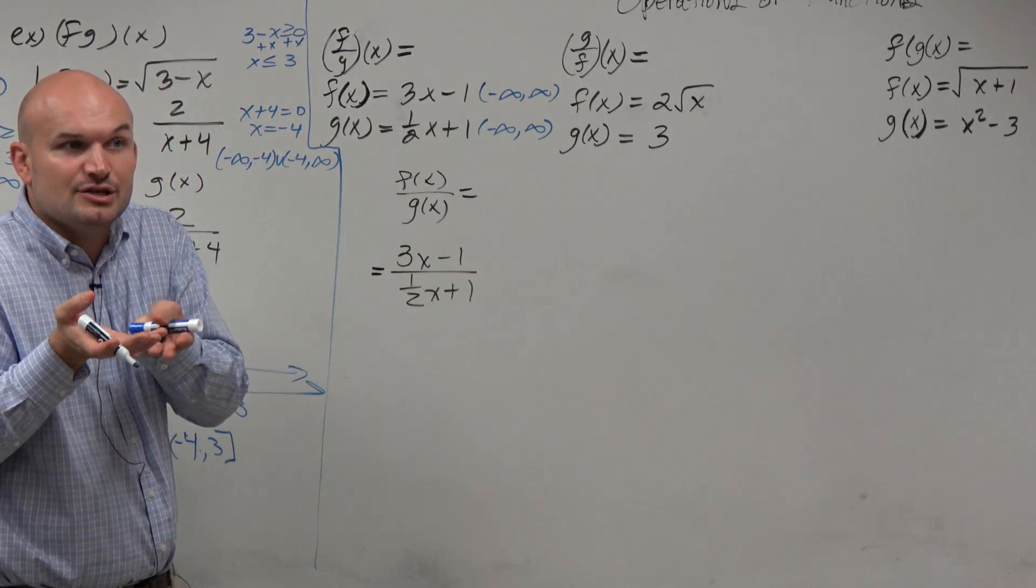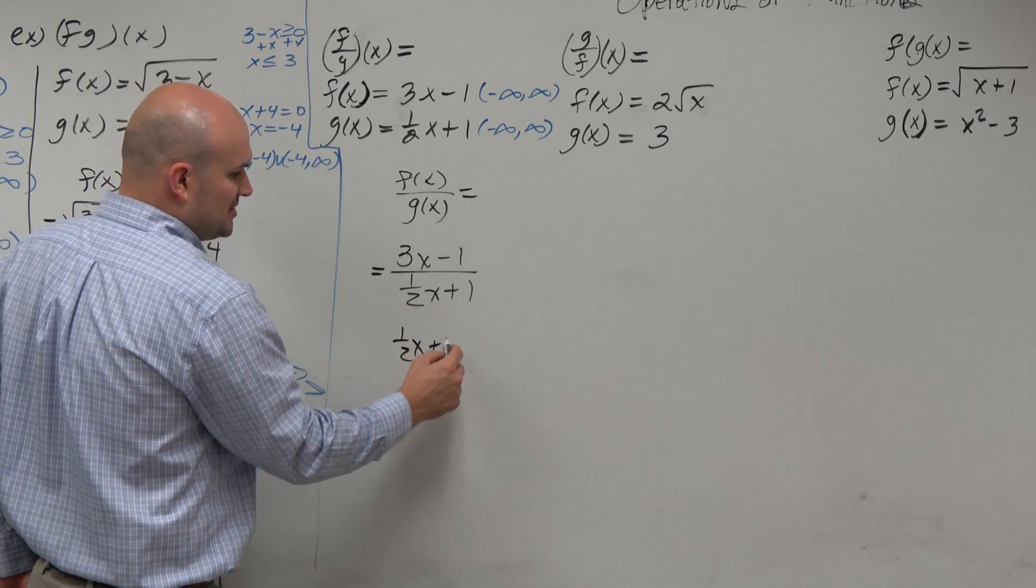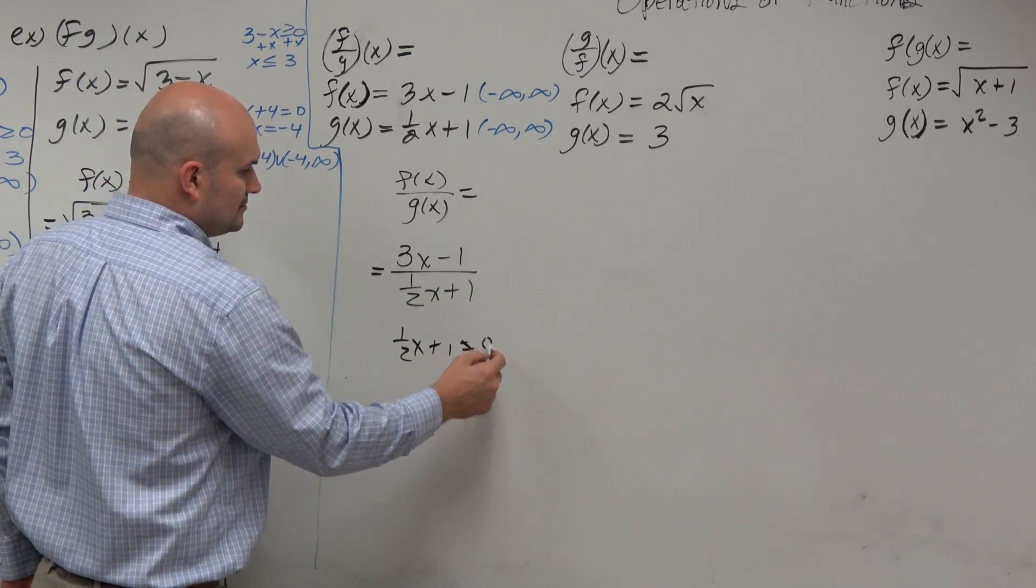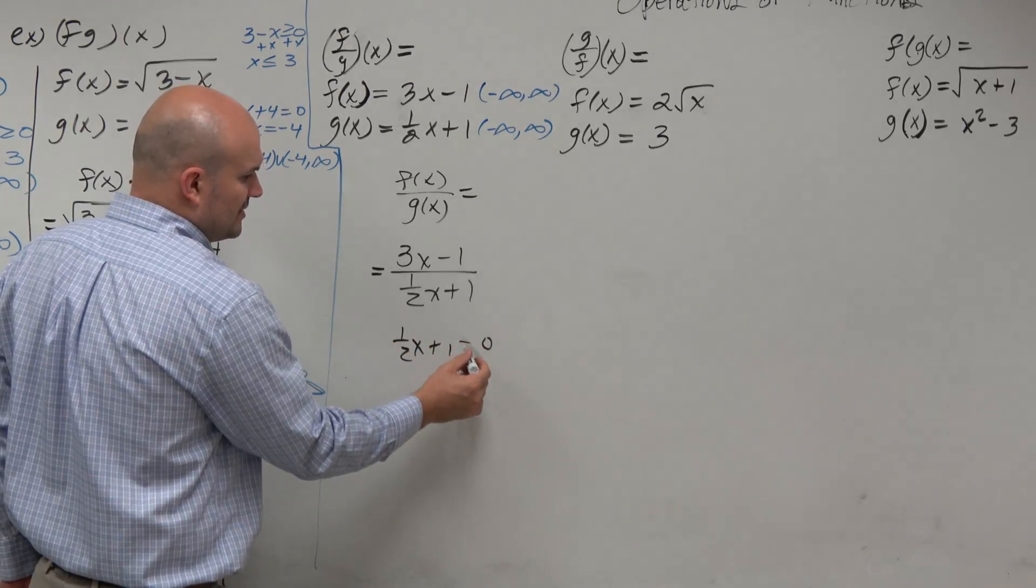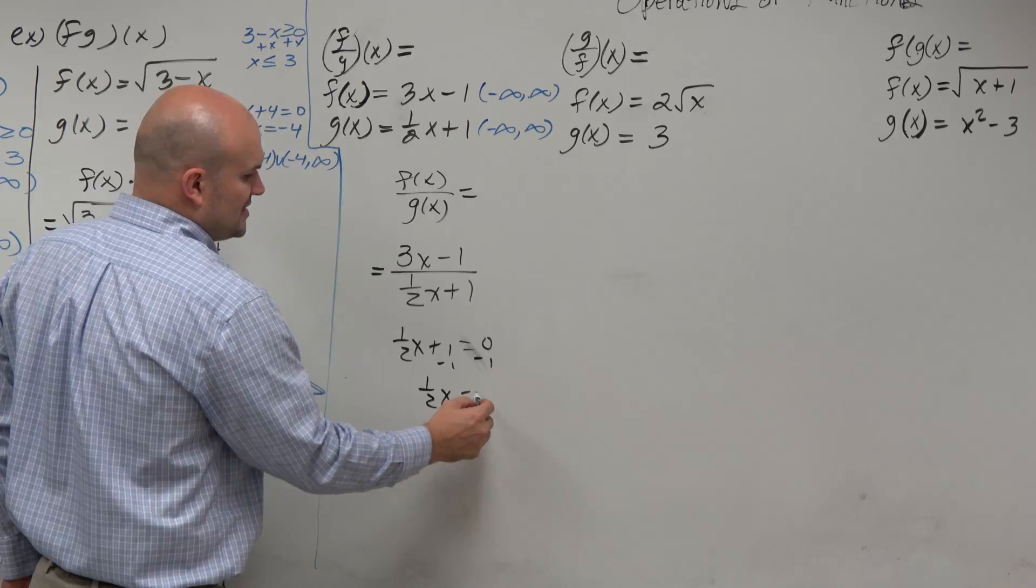But the idea is, what's the domain? So we domain. We have a number under the radical. 1 half x plus 1 cannot equal 0. Or let's set it equal to 0. Forget the 1 and 1 half. Subtract 1.